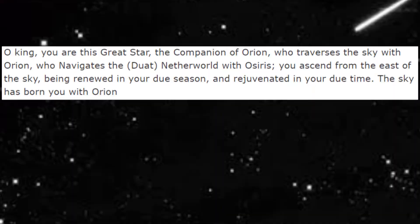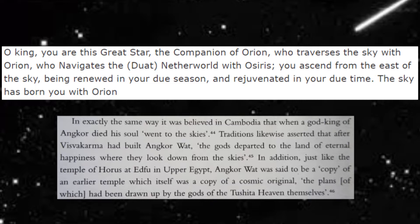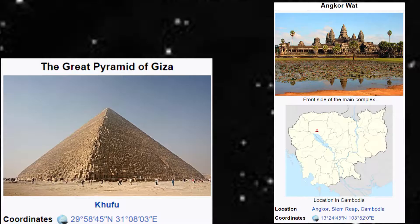Another connection is relating to the stars. In ancient Egypt, it was believed that once a Pharaoh died he would ascend to the skies. In Cambodia, it was also believed that when a God King of Angkor died, his soul went to the skies. So here we have our first connection. Horus appears to be associated with both Giza and Angkor Wat in ancient texts written by priests or wise men.